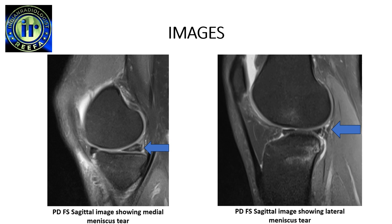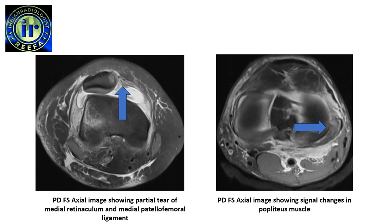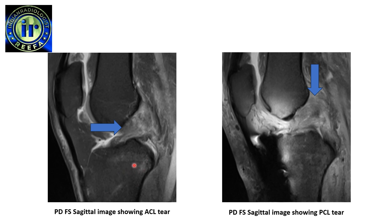In the image gallery, the first image on the left is a proton-density fat-sat sagittal image showing tear of the posterior horn of the medial meniscus. The image on the right is a proton-density fat-sat sagittal image showing tear in the posterior horn of the lateral meniscus. The next image on the left is a proton-density fat-sat sagittal image showing lateral collateral ligament tear, and another image showing partial tear of the medial retinaculum and medial patellofemoral ligament. The image on the right shows signal changes in the popliteus muscle, and another image shows complete tear of the ACL.